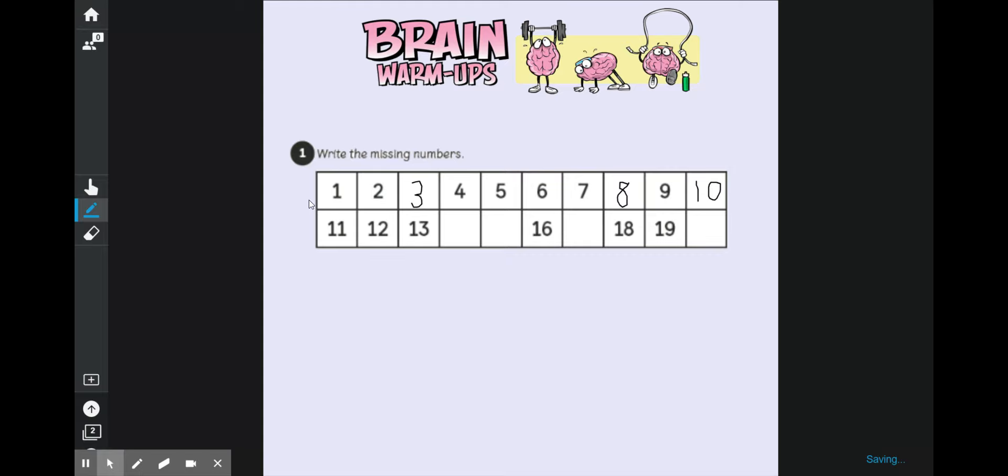Then we've got our teen numbers. 11, 12, 13, 14. And we can look above here to help us. We've got the 4 there, but 14 means it starts with a 1, and then a 4 to show us that it is made up of 1 ten and 4 ones. Well, it comes after 14. We need 15, same again, 1 ten, but this time there's 5 ones.